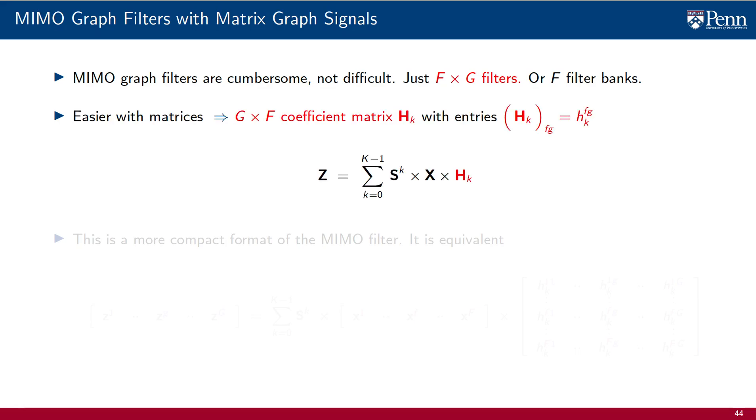We can make them easier if we represent them with matrix notation. To that end, let HK be a G times F matrix, in which the entry in row F column G is the filter coefficient HKFG. With this notation, the MIMO graph filter we just introduced can be written more compactly. The output is a matrix graph signal Z given by a sum of diffusion indexes K, of powers of the shift operators, multiplying the input signal in matrix form, and multiplying the filter matrix HK.